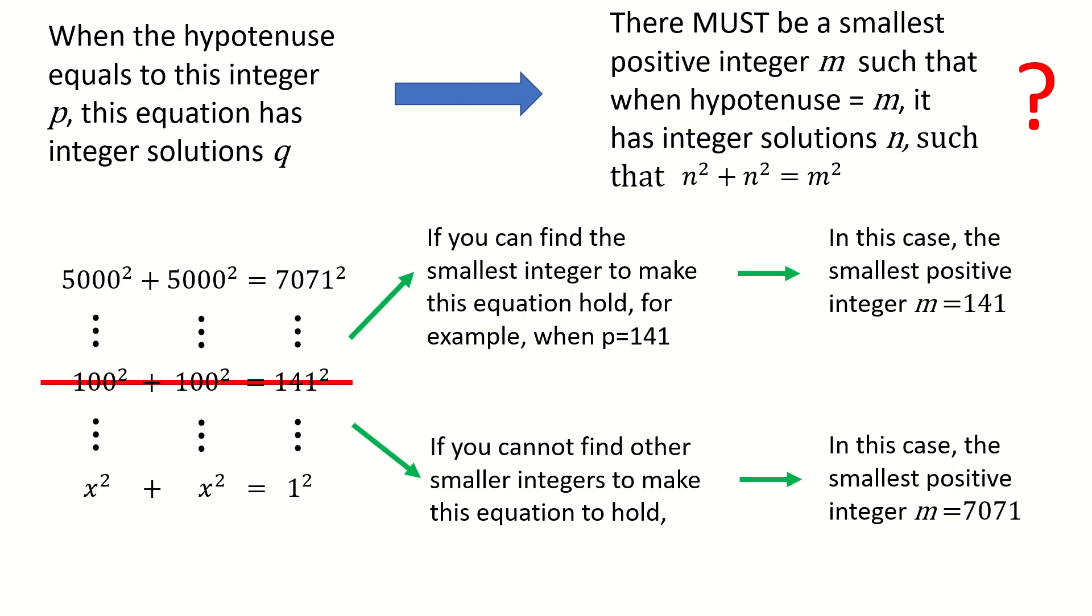In either case, we can always find the integer m. So that means there must be a smallest positive integer m to make this equation hold. So I hope this example helps you better understand this step. So I remove the question mark.